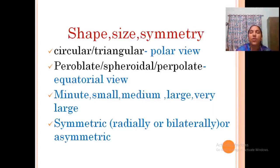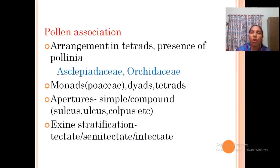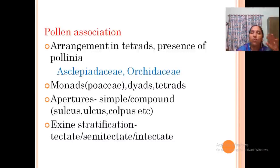Regarding shape and size: in polar view pollen may be circular or triangular; in equatorial view it may be paroblate, spheroidal, or prolate. Size can be minute, small, medium, large, or very large. Symmetry may be radial, bilateral, or asymmetrical. For association, two families — Asclepiadaceae and Orchidaceae — are characterized by polyenia, which is a special character of these two families.